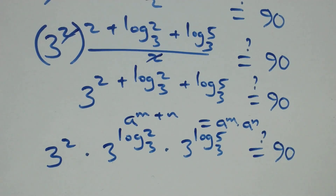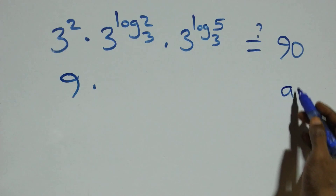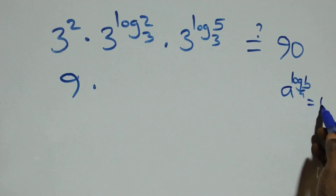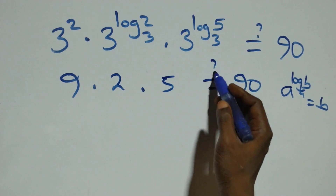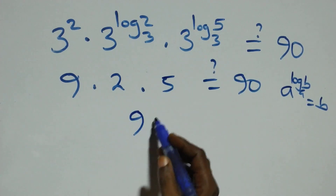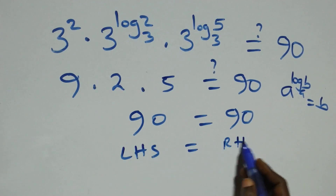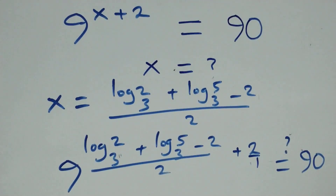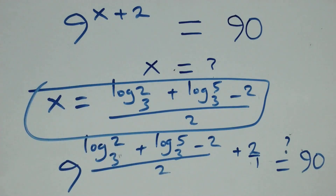Three squared is 9. Then applying the rule a^(log_a b) = b: 3^(log₃2) equals 2, and 3^(log₃5) equals 5. So we have 9 times 2 times 5. Nine times two is eighteen, and eighteen times five is ninety, which equals 90 on this side. The left-hand side equals the right-hand side. Therefore we conclude that x equals (log₃2 + log₃5 − 2) / 2 satisfies the given problem. Thank you for watching — don't forget to subscribe for more videos, turn on the notification bell, share the video, give a thumbs up, and put your comments. See you next class.